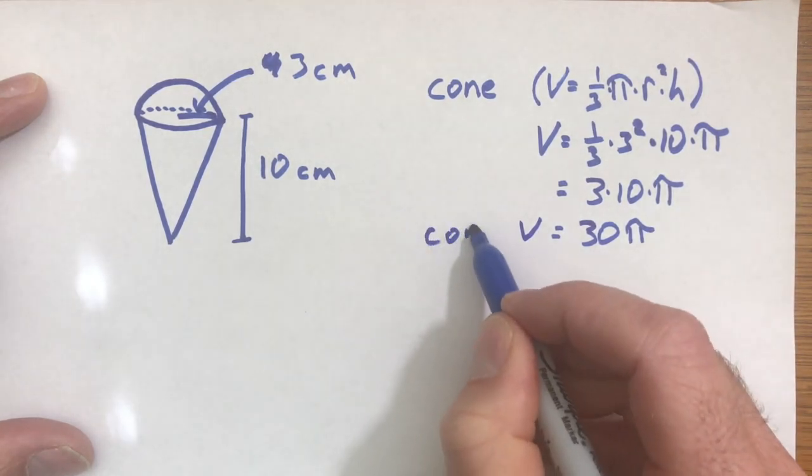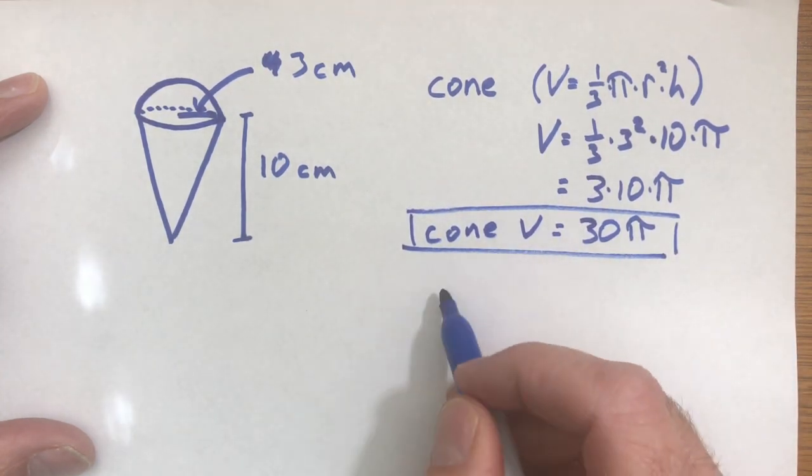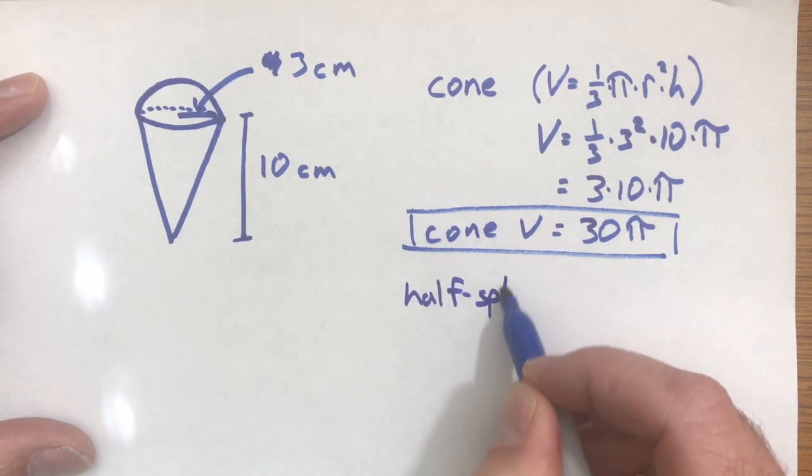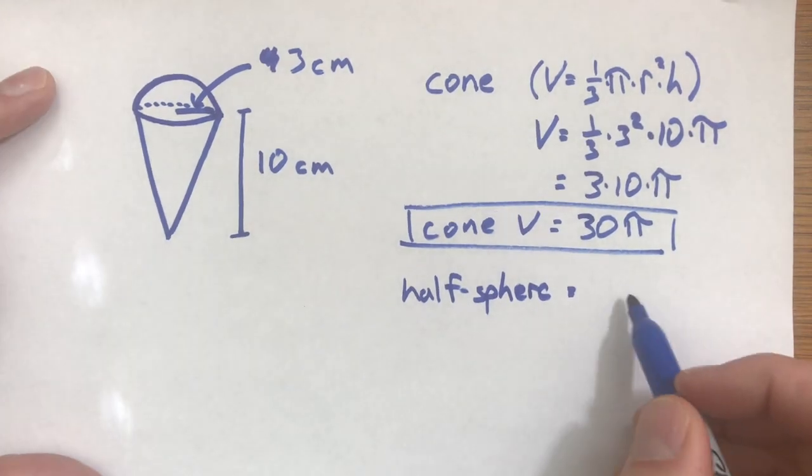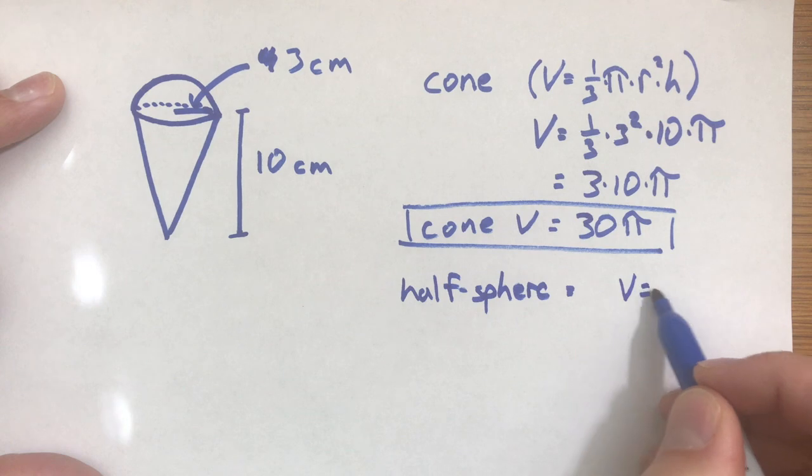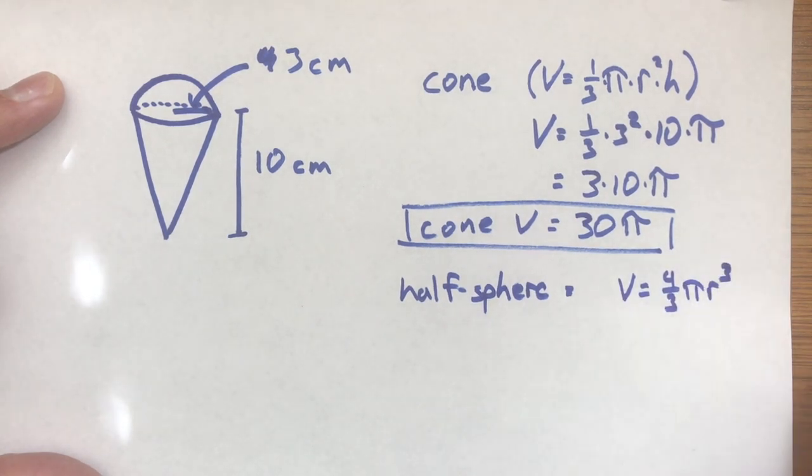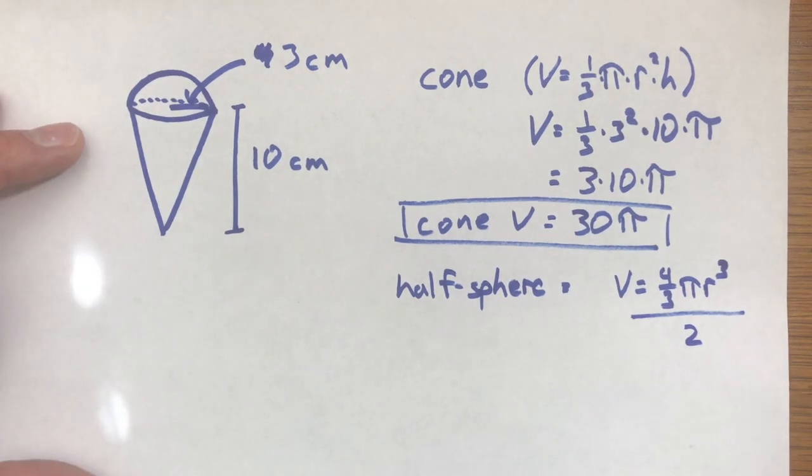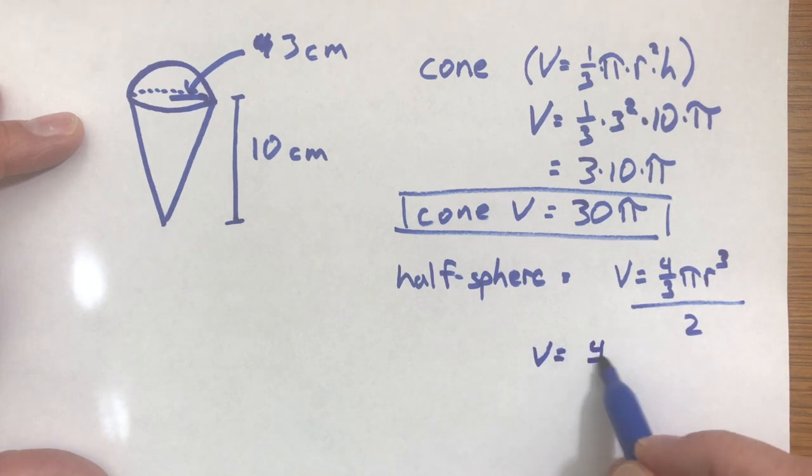Now we need to find the volume of the half of a sphere, so I'll say half sphere. The volume for an entire sphere, if you remember, is four-thirds pi times radius to the third power. Since we're talking about a half of a sphere, we're going to want to do that and then divide the whole thing by two. So our half of a sphere is four-thirds times three cubed times pi, and then that whole thing divided by two.